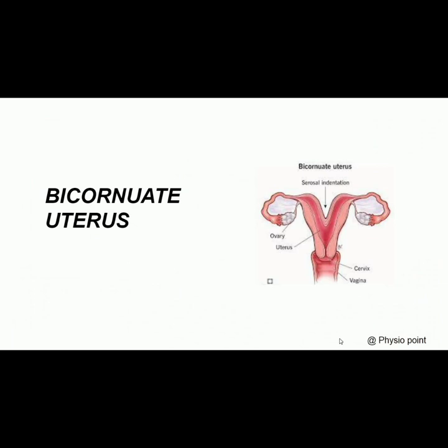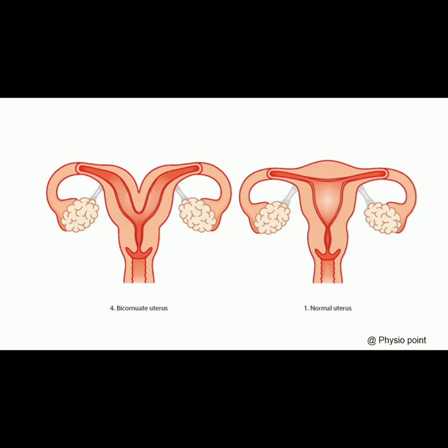Before understanding the term bicornuate uterus, first let us understand what is a normal uterus briefly. This is the normal uterus. It looks pear-shaped and there is no indentation at the level of the fundus of the uterus.